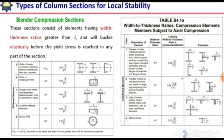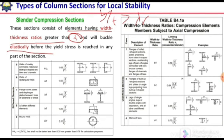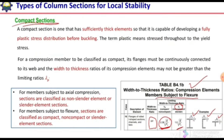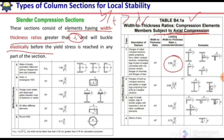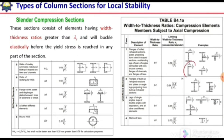A slender column is comparable to a long column. In slender columns, the elements of the section have a width-to-thickness ratio greater than λr, and the material stays in the elastic range — no part of the section yields. We use the table for axial compression to check the limiting value of λr. If there is a flexural load, we use the λr value from the flexure table to classify it. For a channel section, if b/t is greater than the tabulated value, it is a slender section.